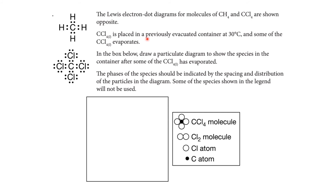Now let's look at a practice question. The Lewis electron dot diagrams for methane (CH4) and carbon tetrachloride (CCl4) are shown. CCl4 in liquid state is placed in a previously evacuated container at 30°C and some of the CCl4 liquid evaporates. We need to draw a particulate diagram showing the species in the container after some CCl4 has evaporated, with phases indicated by the spacing and distribution of particles. The available species include CCl4, Cl2 molecules, chlorine atoms, and carbon atoms.